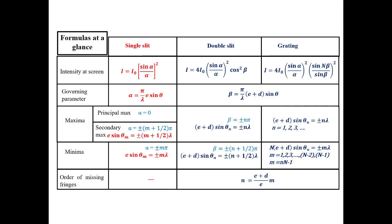As always, we will start this lecture with the formulas. Intensity by single slit diffraction is given by one formula, by double slit diffraction is another, and by grating is another. There is only one difference: in double slit a cos squared beta term is included, and in grating a different term is included.